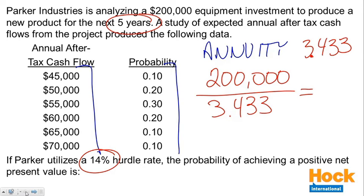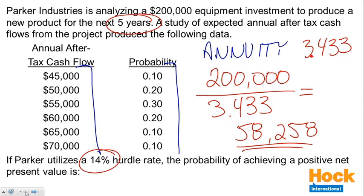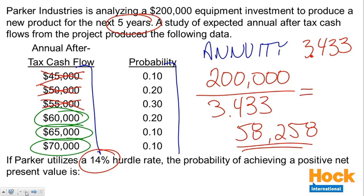When we do the math, we get $58,258 as the annual cash flow that is needed. So then we look at our column of annual cash flows: $45,000 isn't going to do it, $50,000 is not going to do it, $55,000 is not going to do it. But if they have $60,000, $65,000, or $70,000 as the annual after-tax cash flow, they will have a positive net present value, which is the goal they are going for.